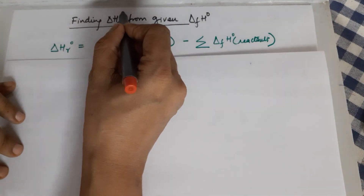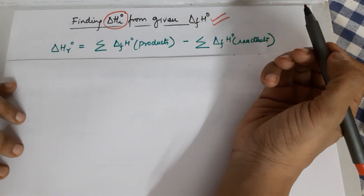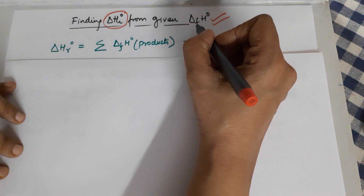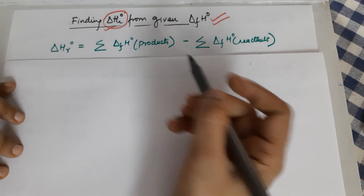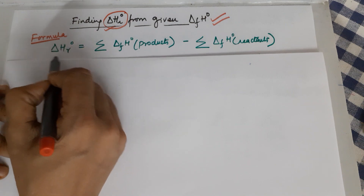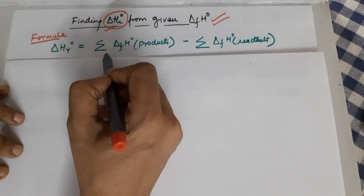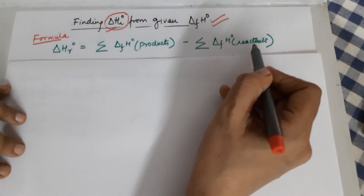Good morning, students of class 11. Moving on with the chapter of thermodynamics, as promised in my last video, I am doing the numerical class on finding the enthalpy of any given reaction if you are provided with enthalpies of formation. The formula we use for this purpose is that the standard enthalpy change of a reaction equals the total of all the heats of formation of products minus the total of all the heats of formation of reactants.